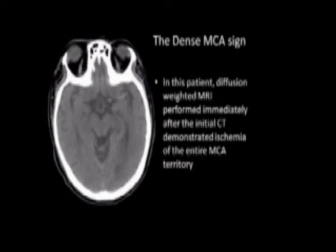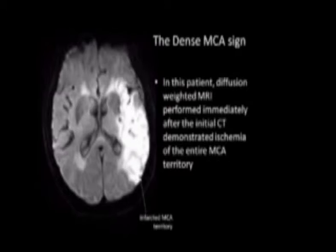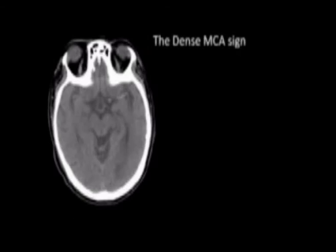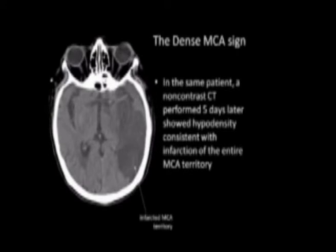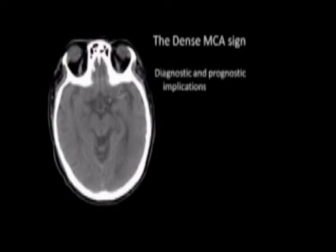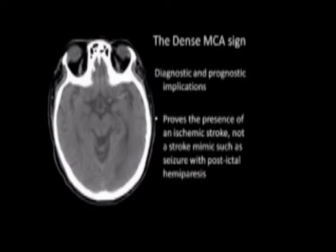In this patient, diffusion-weighted MRI performed immediately after the initial CT demonstrated ischemia of the entire MCA territory. In the same patient, a non-contrast CT performed five days later showed hypodensity consistent with infarction of the entire MCA territory. The dense MCA sign has important diagnostic and prognostic implications — it proves the presence of an ischemic stroke, not a stroke mimic such as seizure with postictal hemiparesis.